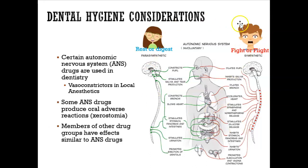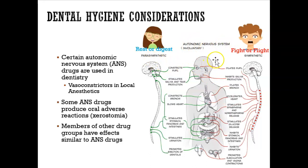I want to review the autonomic nervous system. You may remember from anatomy class where you learned about the nervous system and how it's broken down into two parts: the sympathetic nervous system and the parasympathetic nervous system. I'm just going to quickly recap what that is about.